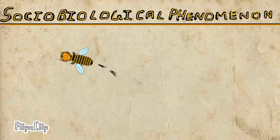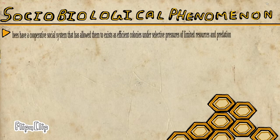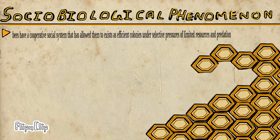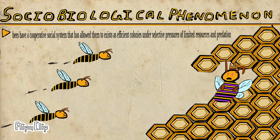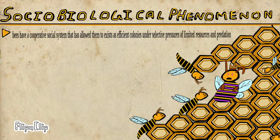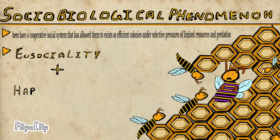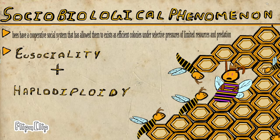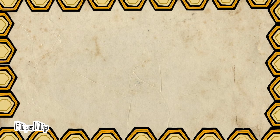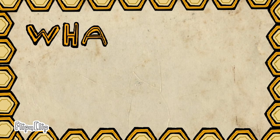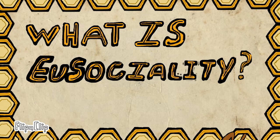Aside from their important ecological roles, bees give us an understanding of a unique sociobiological phenomenon. Bees have evolved a cooperative social system that helps organize the colonies under the selective pressures of limited resources and predation. This social system is known as eusociality, and its genetic basis is known as haplodiploidy.